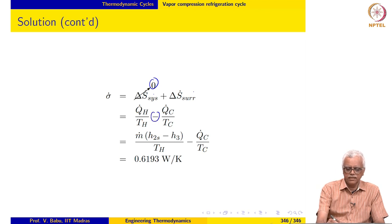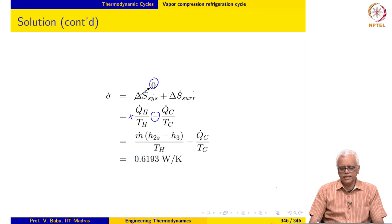Accordingly, this has a negative sign and this has a positive sign. TH and TC are known. If you substitute the values, sigma dot comes out to be 0.6193 Watt per Kelvin.